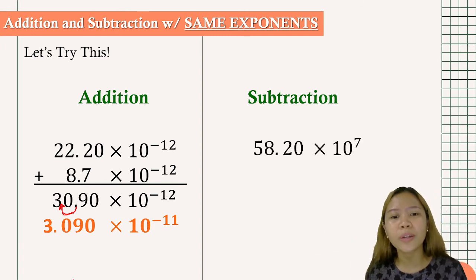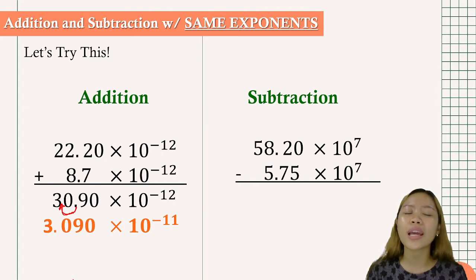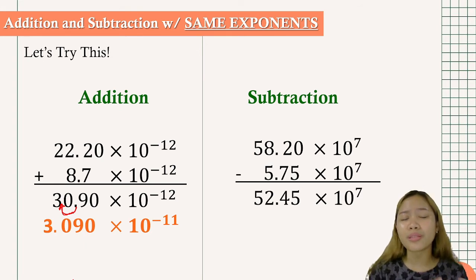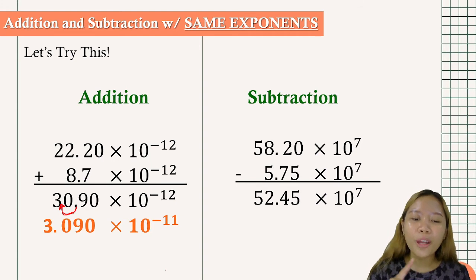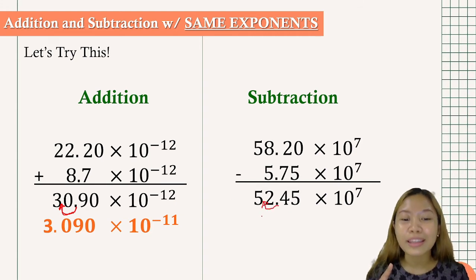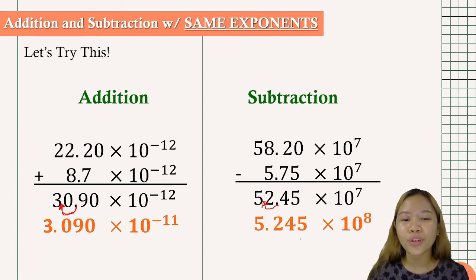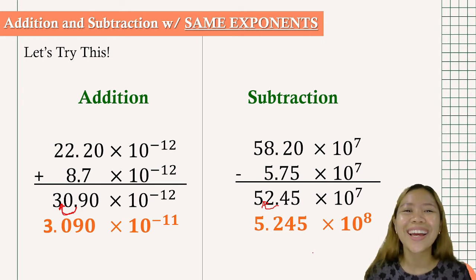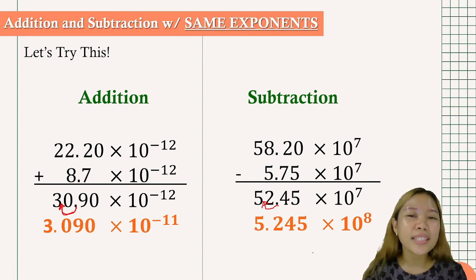For subtraction, we have 58.20 times 10 to the 7th minus 5.75 times 10 to the 7th. Simple subtraction gives 52.45 times 10 to the 7th. We move one place to the left, so the exponent goes from 7 to 8. For our final answer, we have 5.245 times 10 to the 8th. That's how we solve values with the same exponents.